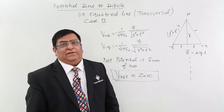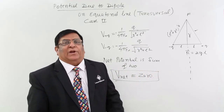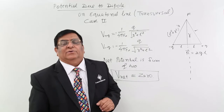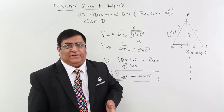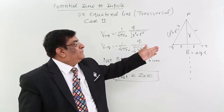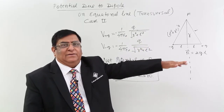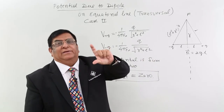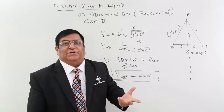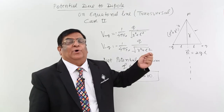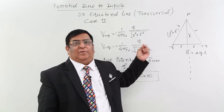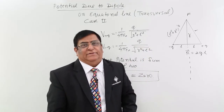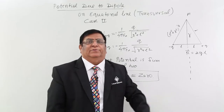After that, we will study in the next lecture the potential at any general point. Do we have a formula? Because we found that on the axial line there is a potential, on the equatorial line there is no potential. Then if a point is at any general place, how much potential will it have? We will do this in the next lecture.